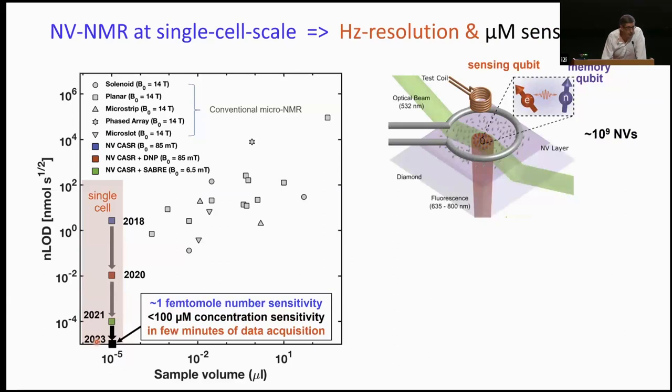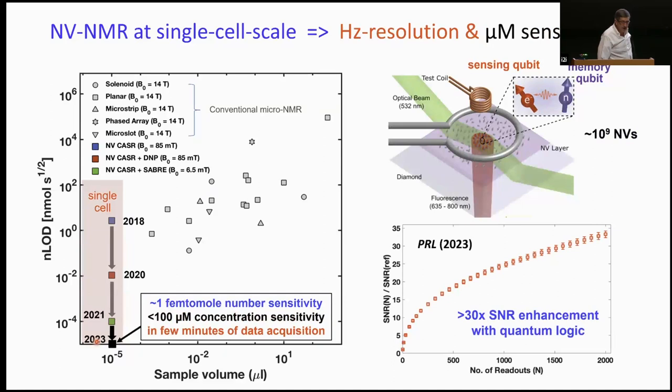Subsequently, we employed a quantum logic technique to get a significant boost in SNR, which takes us down into probably a little bit better than 100 micromolar sensitivity that we're working on doing the NMR demonstration now. This data was not using actual NMR signals. It was broadcast signals that mimicked NMR signals before we go and actually do the NMR measurements ourselves.